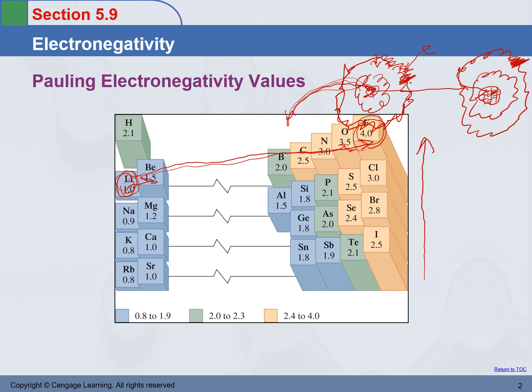Even though going from lithium to fluorine you are adding more protons and more electrons to the atom, the atom is actually becoming smaller and smaller. The size of fluorine, although it has way more protons than lithium, is actually a lot smaller than the size of lithium. When you add more protons, electrons feel more attraction, go closer to the nucleus, and feel even more attraction. As a result, going left to right, electronegativity increases in the periodic table.